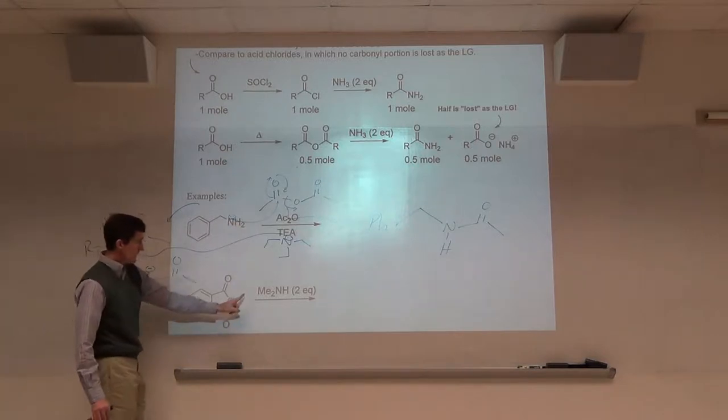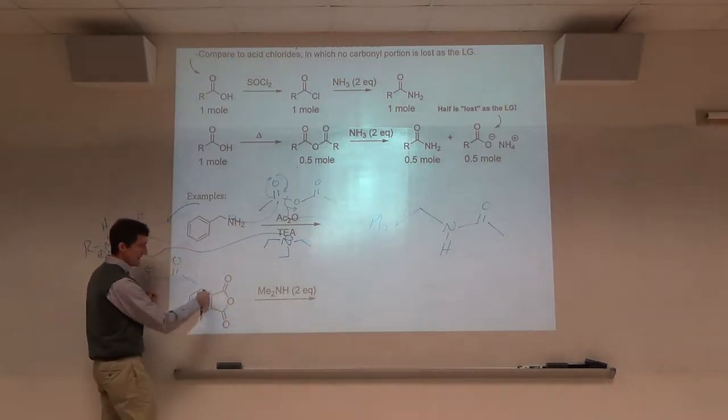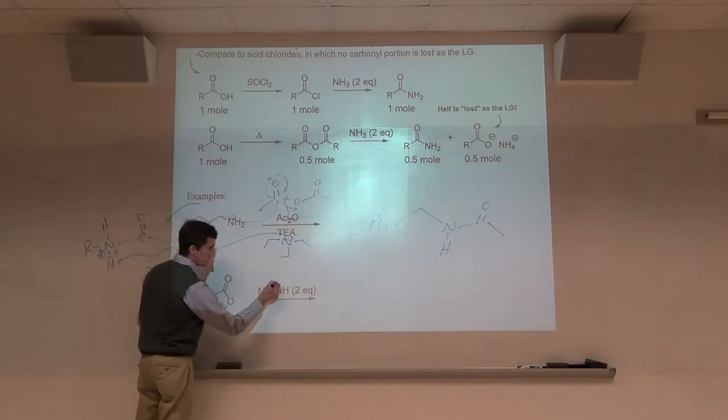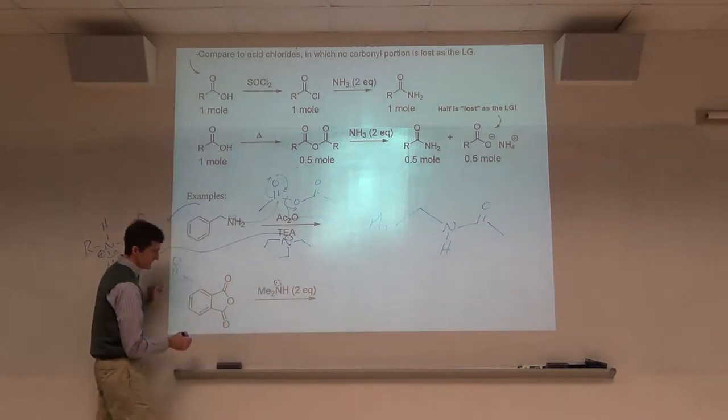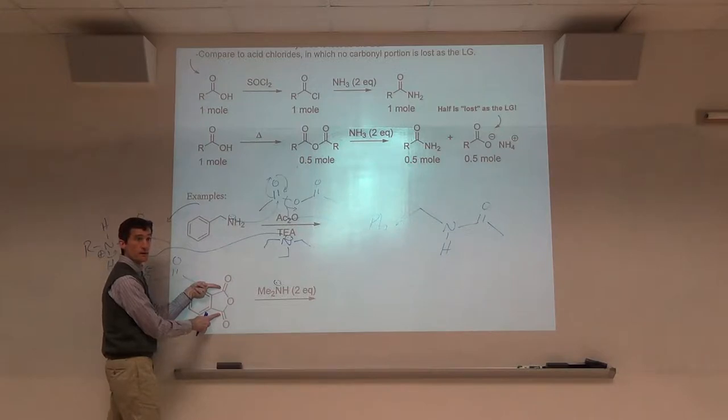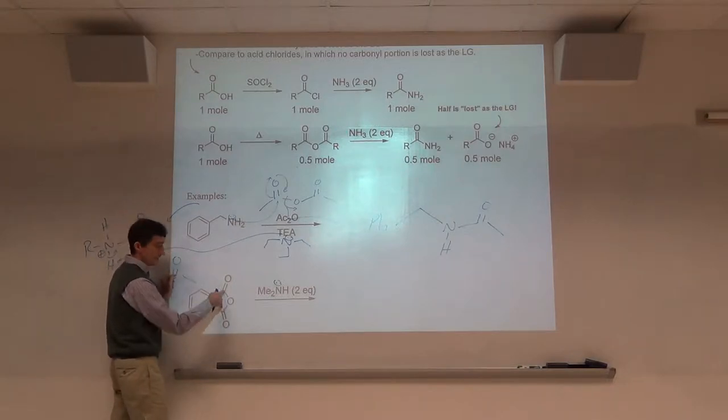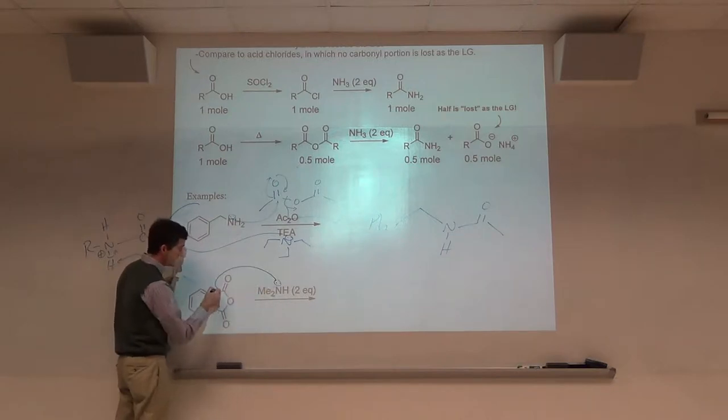Next one. Cyclic anhydride. We have a nucleophile. Amines can be nucleophiles. Which carbonyl do you want to attack? Top or bottom? Actually doesn't matter. If you want to attack the top, we'll attack the top. Symmetrical anhydride. Either one. We can attack this.